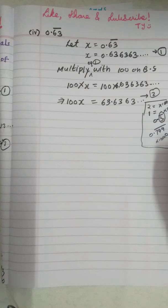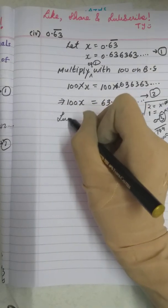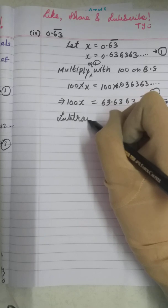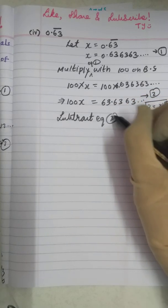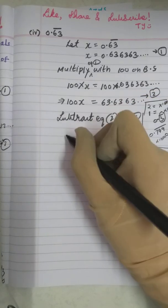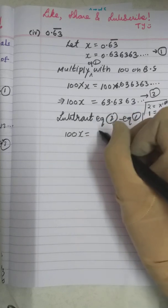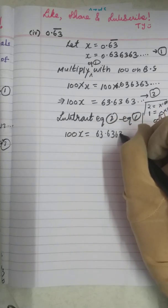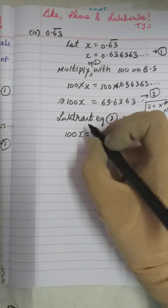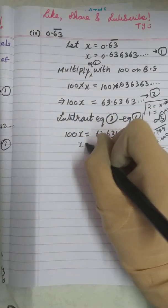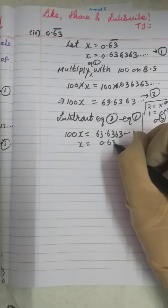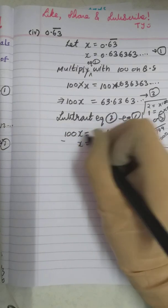This was rough work. Now, what we will do? What is the procedure? You have to subtract equation 2 minus equation 1. So first write equation 2: 100X equals 63.6363 and so on. Then write the first equation: X equals 0.6363 and so on. Subtract it.